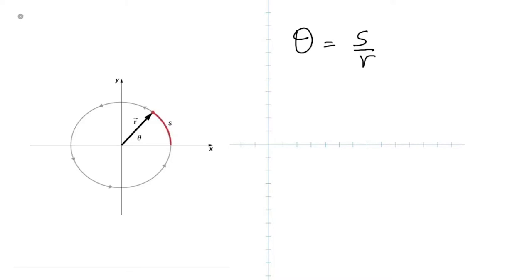We need to know how to convert from degrees to radians. 360 degrees is 2π radians. Which means 180 degrees is π radians. So that will give you the ability to change from one into the other.